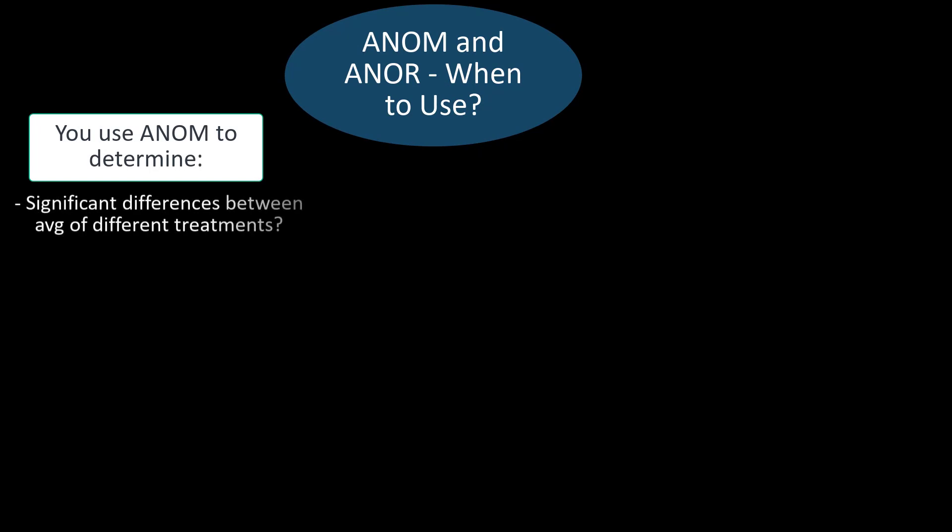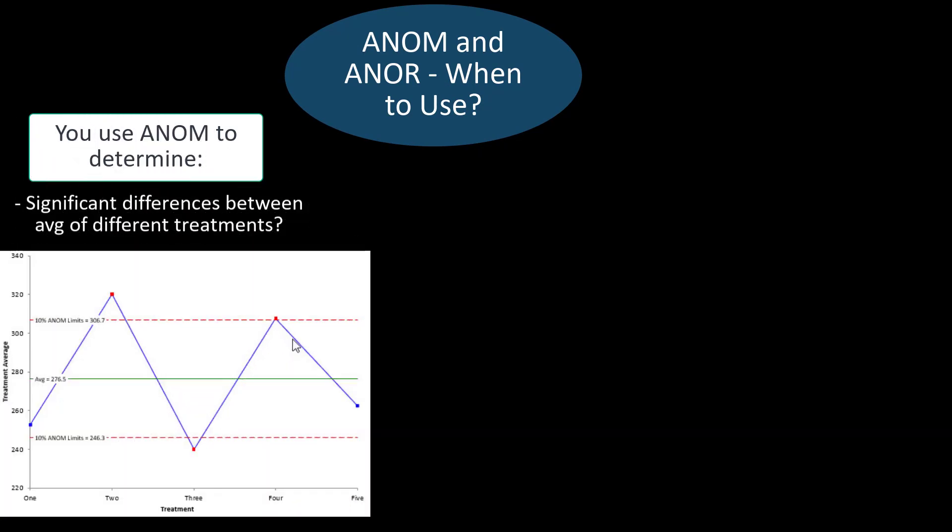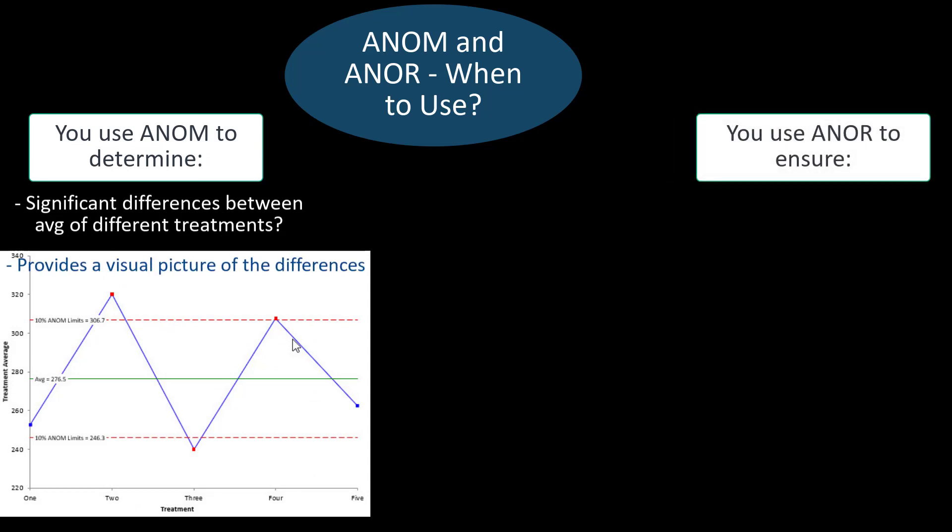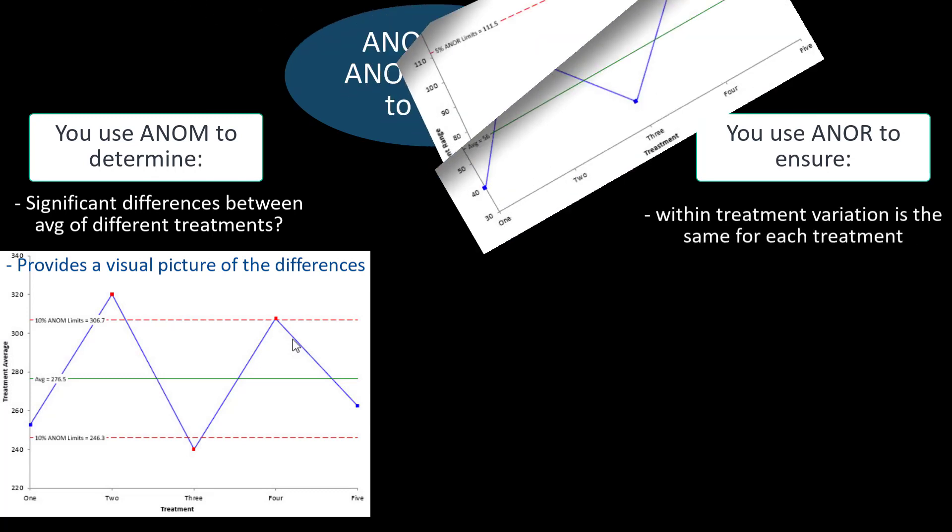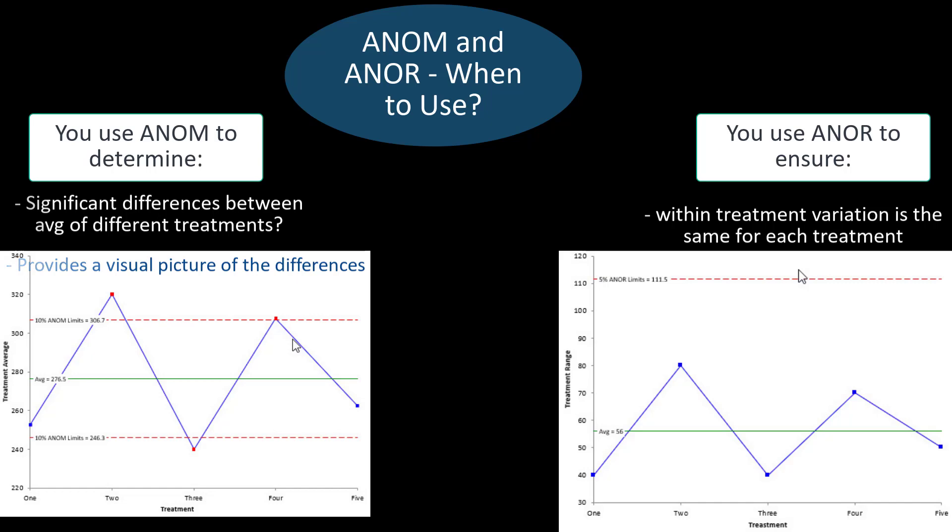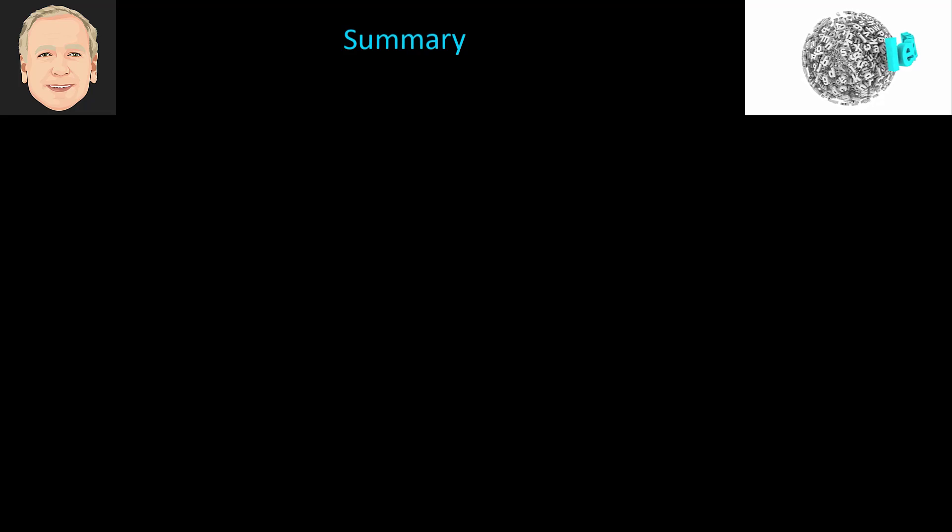When are you going to use the analysis of means and ranges? Use the analysis of means to determine if there's a significant difference between the average of different treatments. It provides a visual picture of the differences and whether there are any differences. You're going to use the analysis of range to ensure that the within-treatment variation is the same for each treatment. And that means that the results for the range are in control.